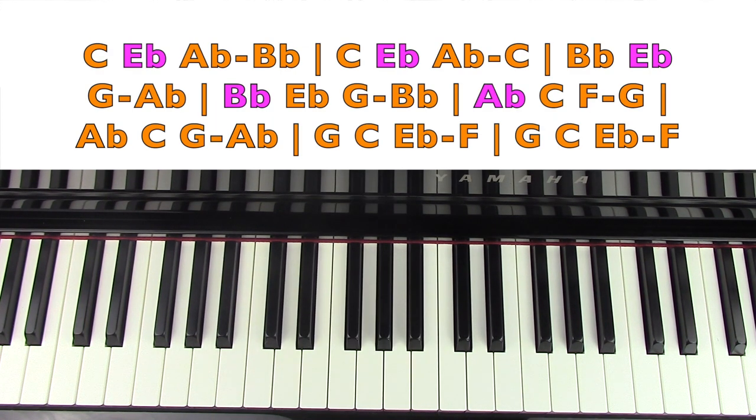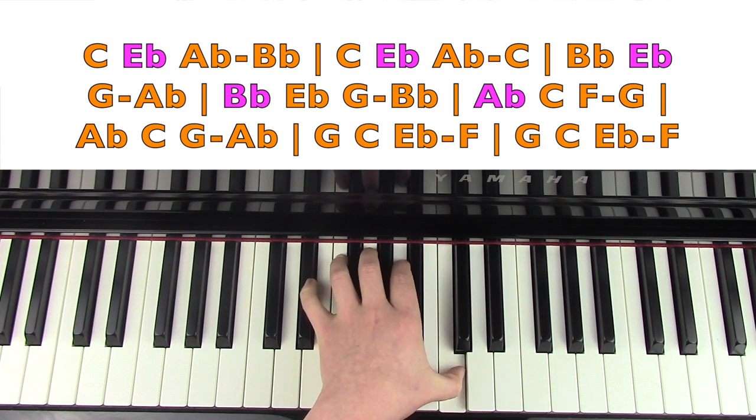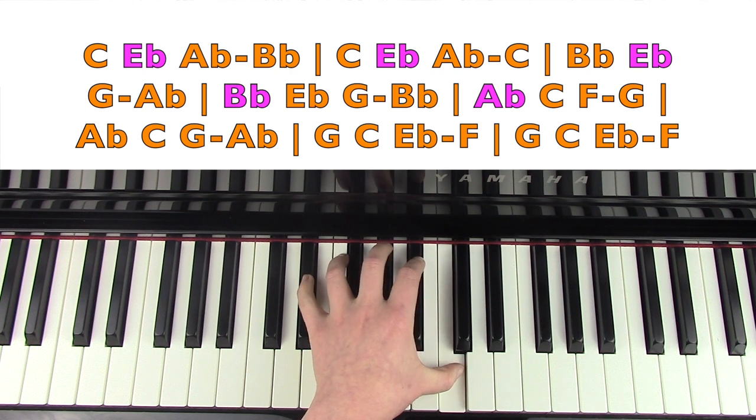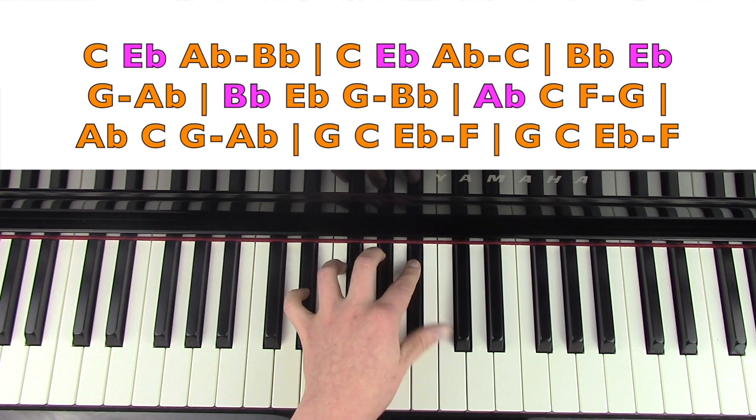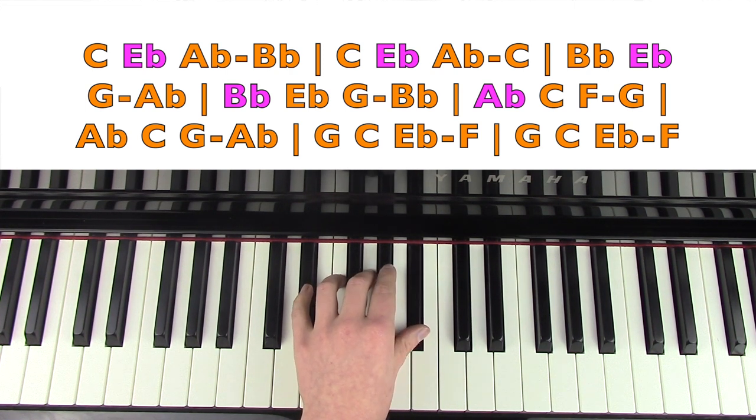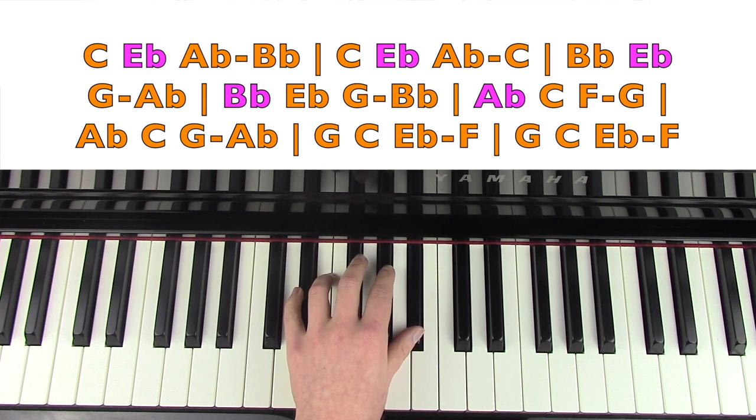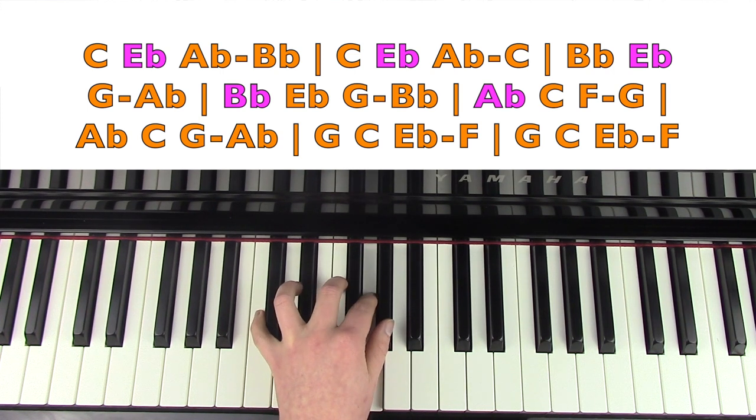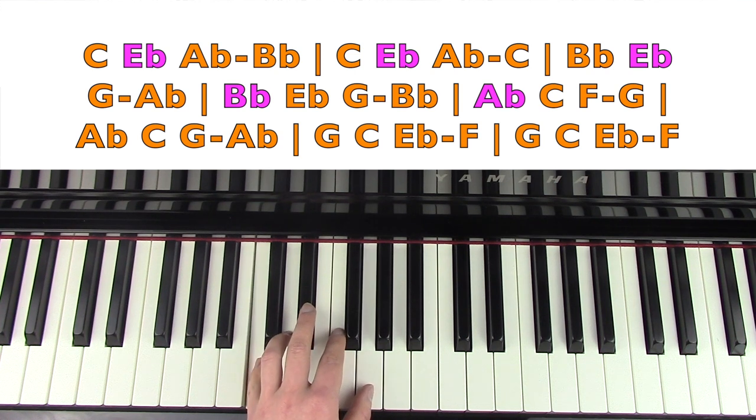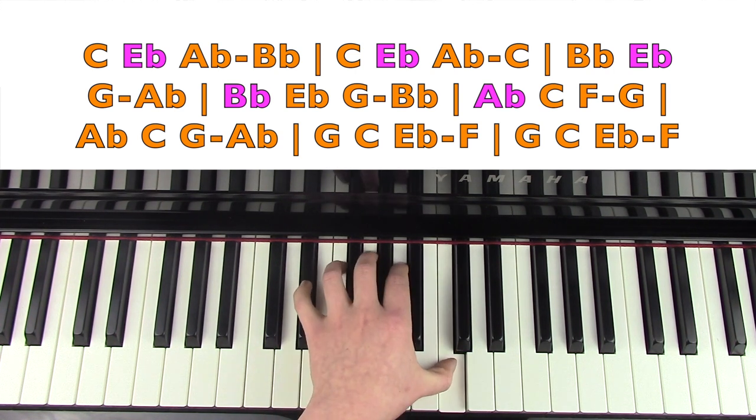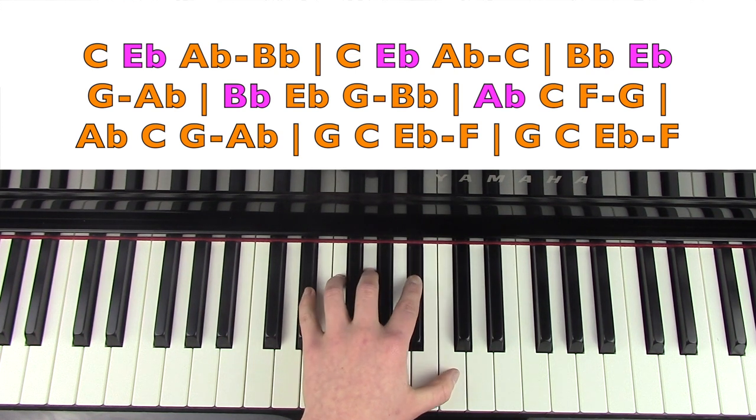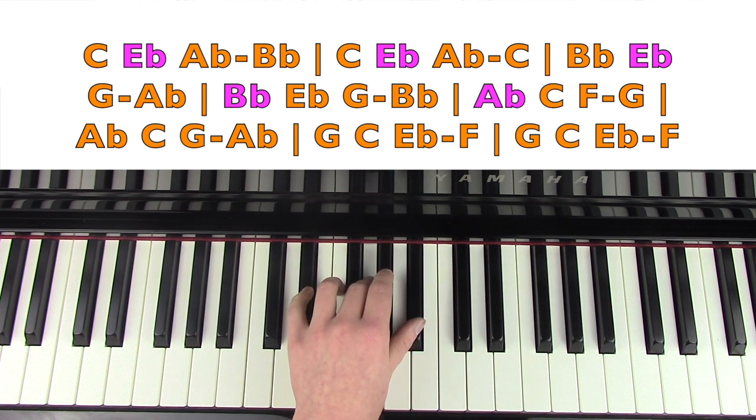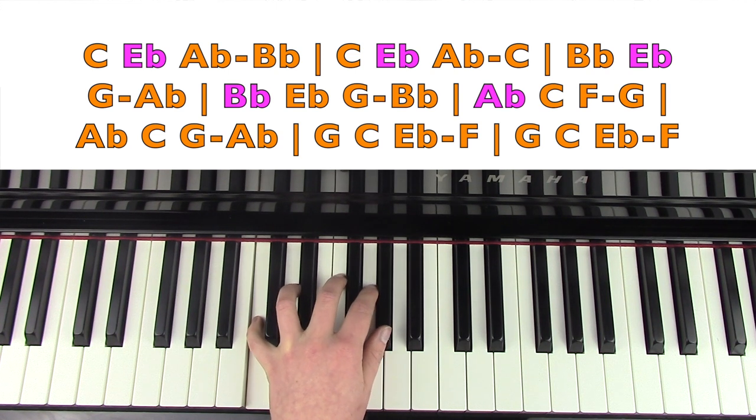I'm going to look at the left hand now. Because the left hand is a bit more interchanging, I'm going to break this down into two parts, so we're going to look at the first eight bars first. We've got C, E, A flat, B flat, C, E, A flat, C, B flat, E, G, A flat, B flat, E flat, G, B flat, A flat, C, F, G, A flat, C, G, G, A flat, G, C, E, A flat, F, G, C, E, A flat, F, G, C, E, A flat, F.